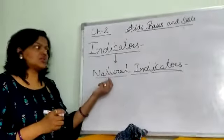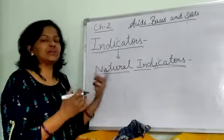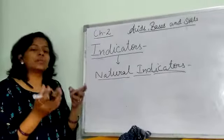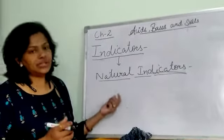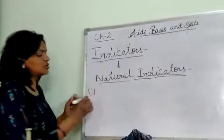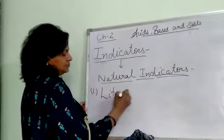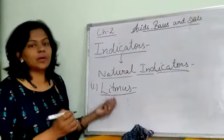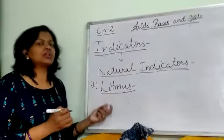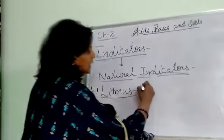Natural indicators are those which we get from nature. The most common natural indicator is litmus. It is a type of purple dye — its basic color is purple — and it is obtained from lichen plants.